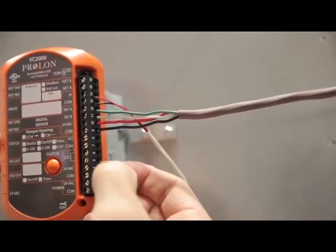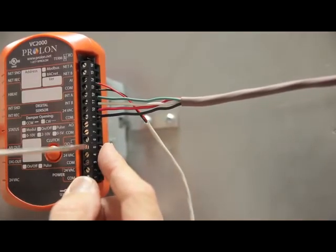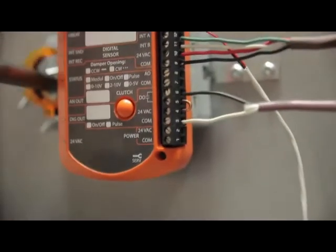If instead your equipment needs a live 24VAC signal to be enabled, then first insert a wire jumper between terminals 4 and 5, and then connect your equipment to terminals 3 and 6.